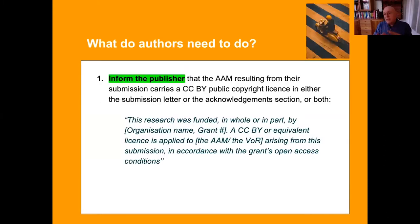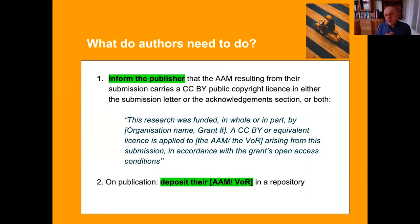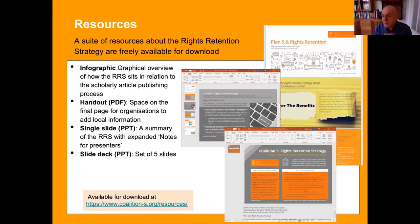There are still a couple of bugs and agreements not yet taken up, but those are wrinkles we will be ironing out in the next few months. To sum up: what do authors need to do? They need to inform the publisher that the AAM resulting from their submission carries a CC BY public copyright licence, including what we call the magic language. Then on publication, they have to deposit the AAM or the VOR — depending on the journal and what is allowed — in a repository. Those are the two things that need to be done. I'll now hand over to Sally to talk about our resources.